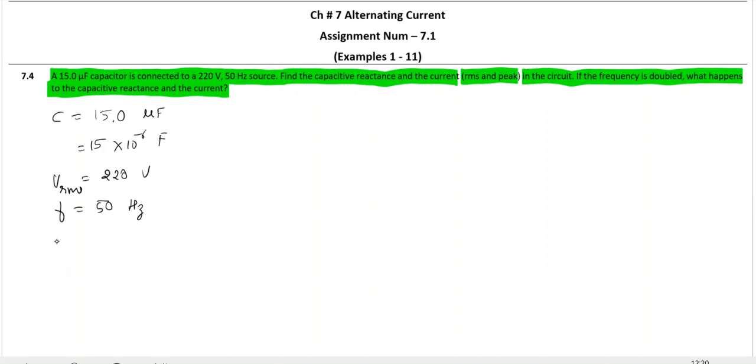What we are asked to find out: capacitive reactance, that is XC, IRMS and IM. And we are also supposed to decide what is the effect of change in value of C on IRMS, IM and XC.